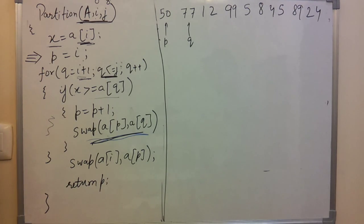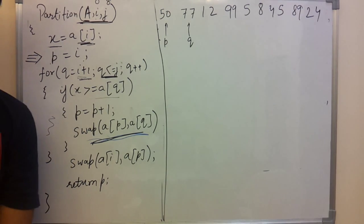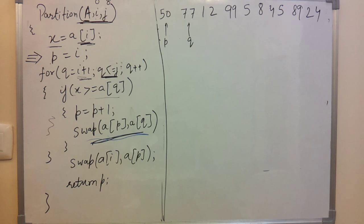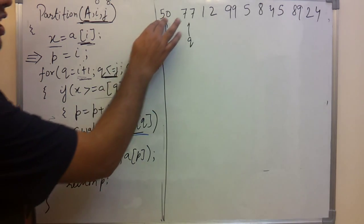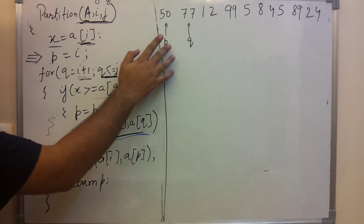Hello guys, good morning. In the last lecture we had learned how the partition algorithm works in QuickSort. So in this lecture we will discuss the time taken by this partition algorithm. We will discuss comparisons and swaps. Our idea is to find out the exact position of element 50. Those who haven't seen the previous video, please go back to it first.